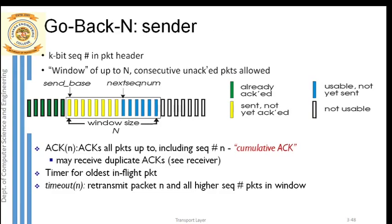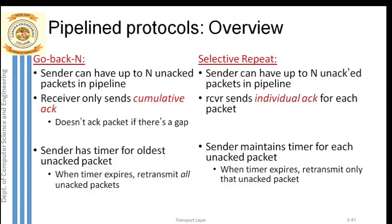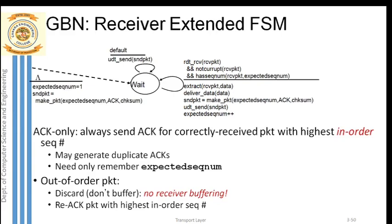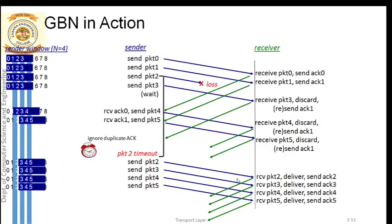The acknowledgement concept in Go-Back-N protocol is called cumulative acknowledgement. Here you can see two packets - packet 0 and packet 1 - both received at the receiver side. Is it really required for the receiver to send acknowledgements for both packets, or is it enough to send only acknowledgement 1? Instead of sending two acknowledgements, can he send only one - which is acknowledgement 1?